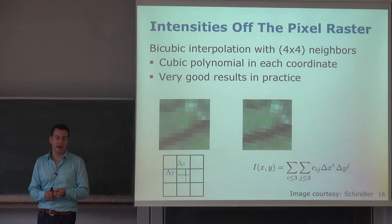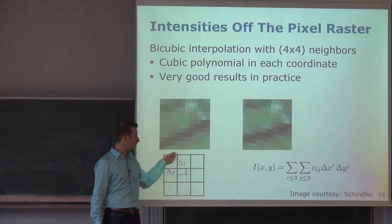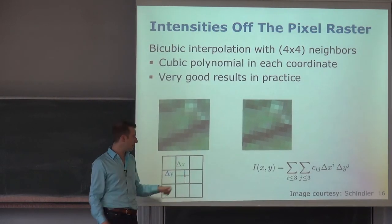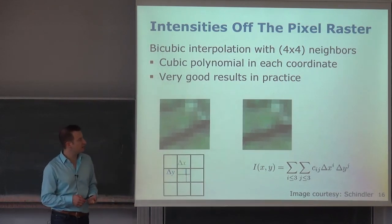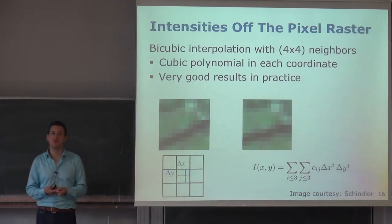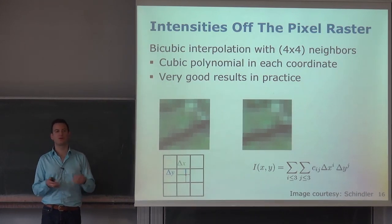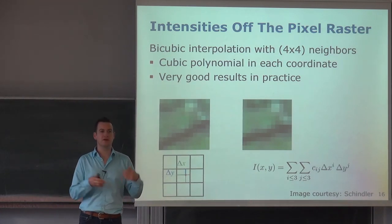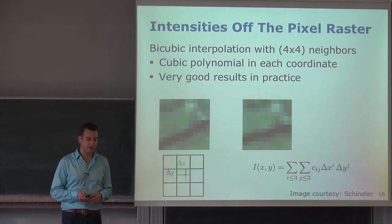Bicubic interpolation takes four neighbors in x and four in y — two to the left, two to the right, two up, two down — and does a bicubic interpolation, which typically generates the best results. This was also discussed in the Photogrammetry 1 course for determining how to do appropriate interpolation of intensity values.